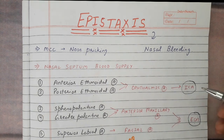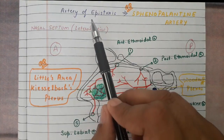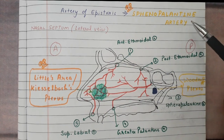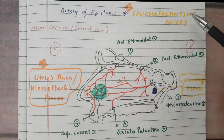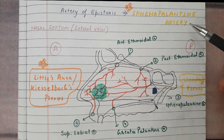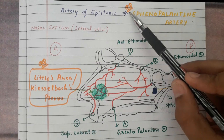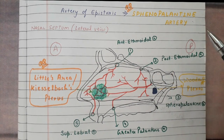These are the important arteries supplying the nasal septum. The artery of epistaxis is the sphenopalatine artery — it is the most commonly bleeding artery during epistaxis. This has been asked many times in different Indian exams.